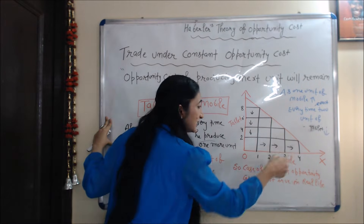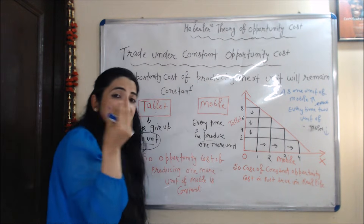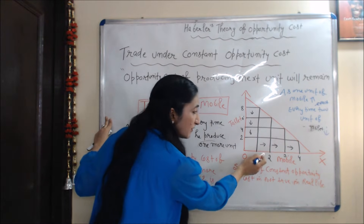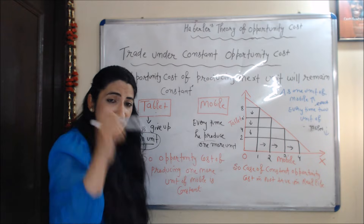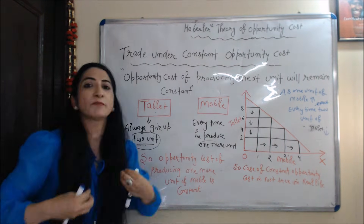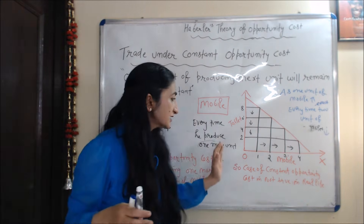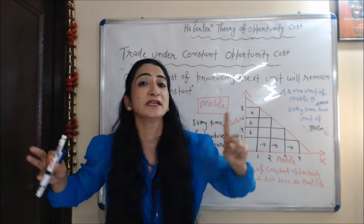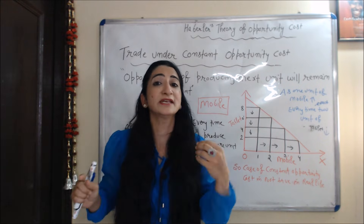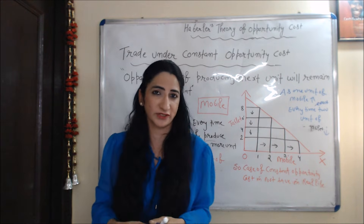In this diagram, as the producer increases one more unit of mobile, every time he has to sacrifice exactly two units of tablet. So we can say that the opportunity cost of producing one more unit of mobile is constant. One important thing: the case of constant opportunity cost is not true in real life. In real life and in international trade, we mostly use increasing and decreasing opportunity cost.